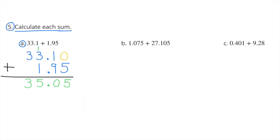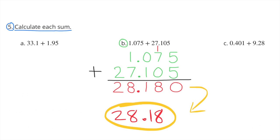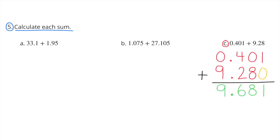Number five: Calculate each sum. A: Thirty-three and one-tenth plus one and ninety-five-hundredths equals thirty-five and five-hundredths. B: One and seventy-five-thousandths plus twenty-seven and one hundred five-thousandths equals twenty-eight and eighteen-hundredths. C: Four hundred one-thousandths plus nine and twenty-eight-hundredths equals nine and six hundred eighty-one-thousandths.